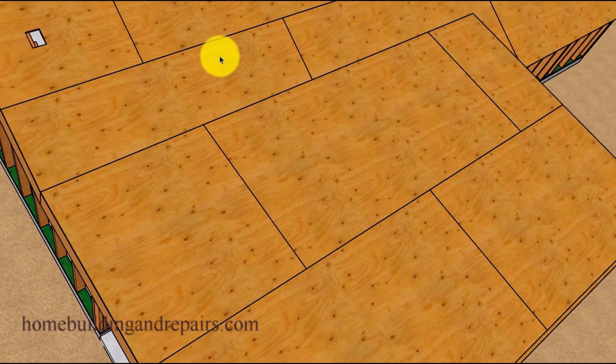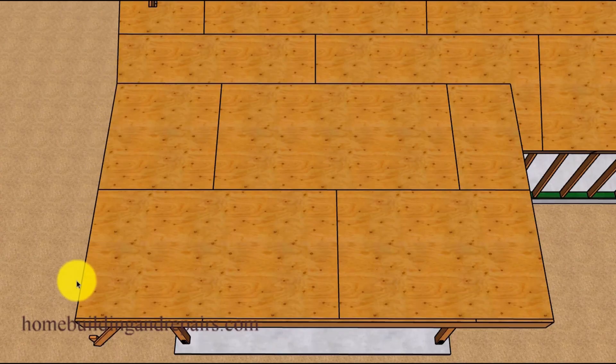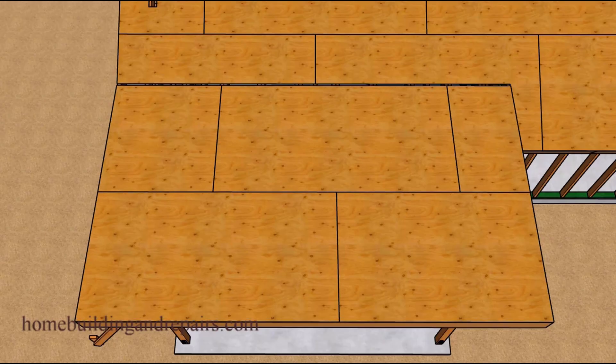So this would be one way to solve this problem. Another thing you could do would be to simply grab your measuring tape and measure from here to here and see what the measurement is. Because you might be able to just bring the fascia board back an inch or two, whatever you need to solve that problem. Hopefully that makes sense.